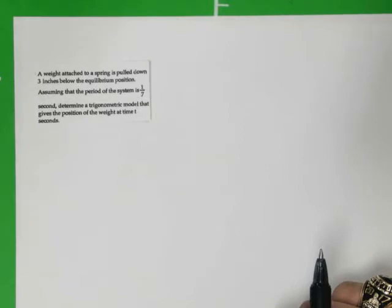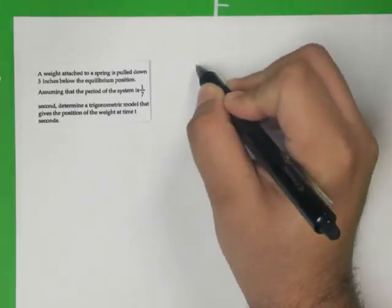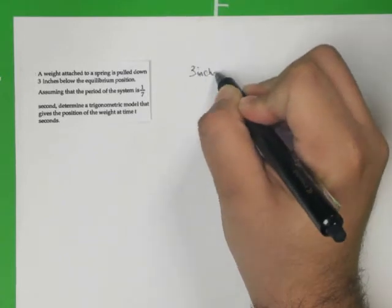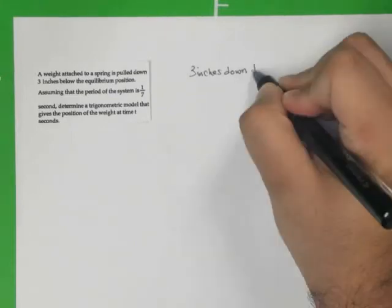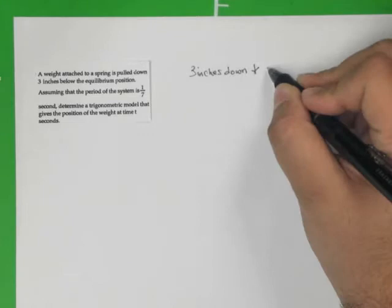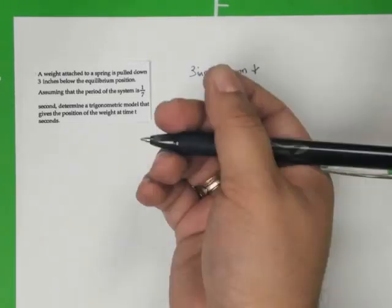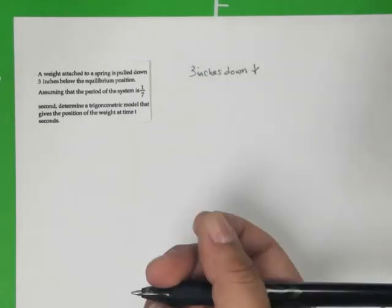So what do we need to know? What should we write down? Well, the fact that this has been pulled down three inches is important, and notice that they gave you the direction. That means when we are pulling the spring, we're pulling it down. The first force is exerted downward.